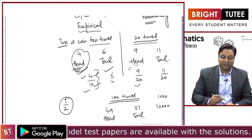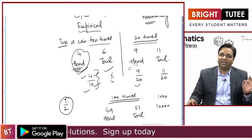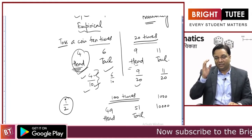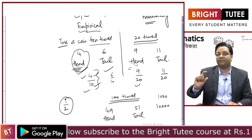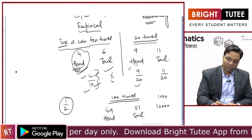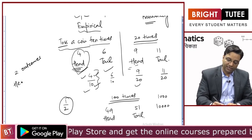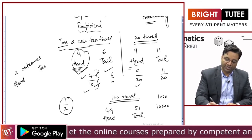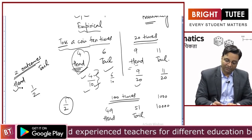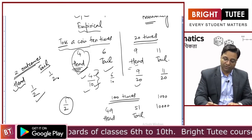This is about experimental probability — everybody who performs the experiment might get a different answer, but as you perform the experiment more number of times, the result will come closer to a particular number. In this case, when we have two outcomes — either a head can come or tail can come — the chances are that head will come 1 out of 2 times and tail will come 1 out of 2 times.